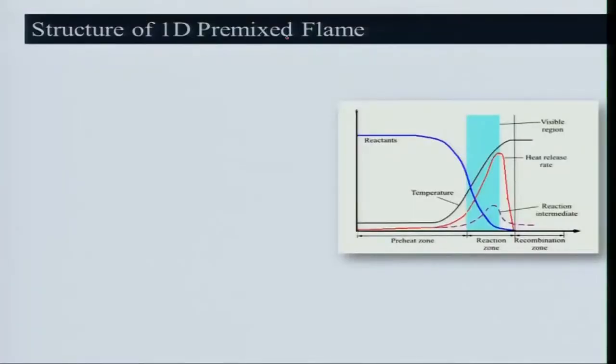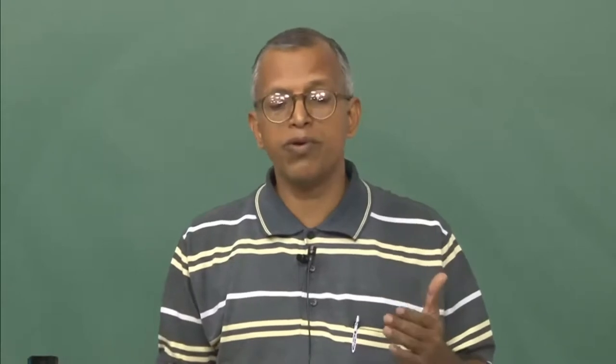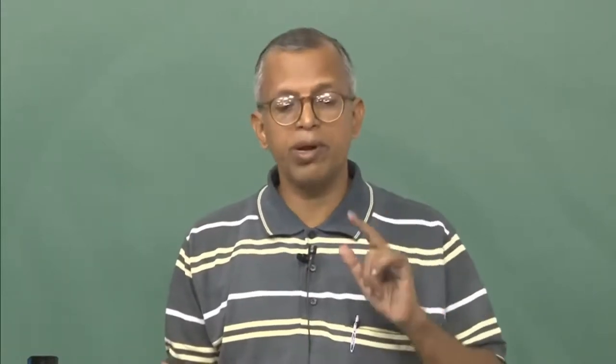A one-dimensional flame can be obtained even in the laboratory, but in nature it is quite difficult. The premix flame is basically a man-made flame — as I mentioned, Bunsen found out that flame. One can stabilize it in a burner and assume it to be one-dimensional. Here what we will be discussing is laminar one-dimensional premix flame, but in nature most flames will be turbulent, and also in practical situations it will be turbulent.